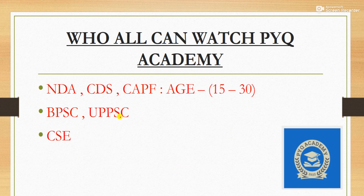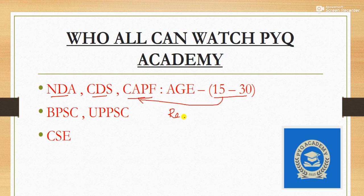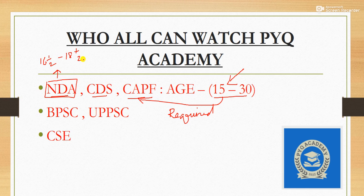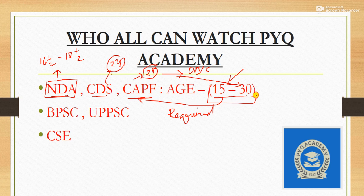I will be focusing more on NDA, CDS, and CAPF, so students in the age group of 15 to 30 are the primary viewers. The age eligibility for NDA is approximately 16.5 to 18.5, for CDS it is up to 24, and for CAPF it is 25 — with relaxation for OBC and SC/ST it comes up to 30. Initially I will also be uploading videos for BPSC and UPPSC.